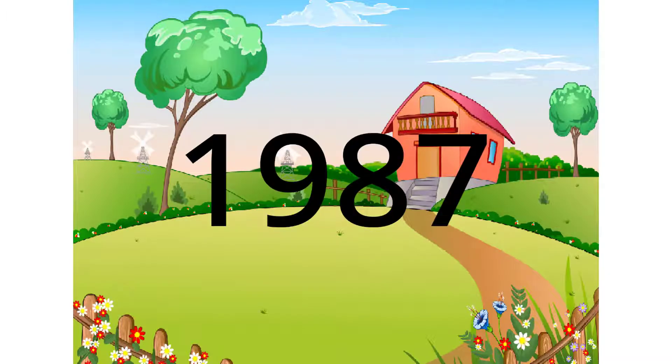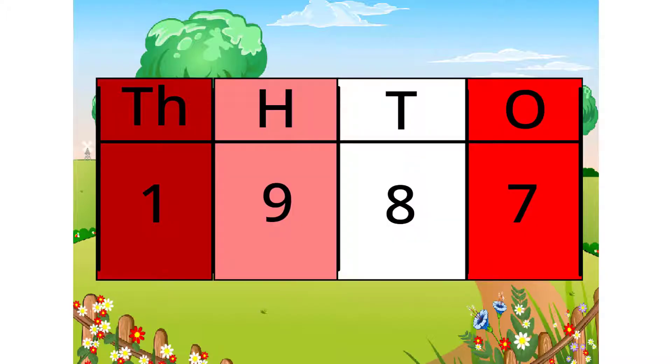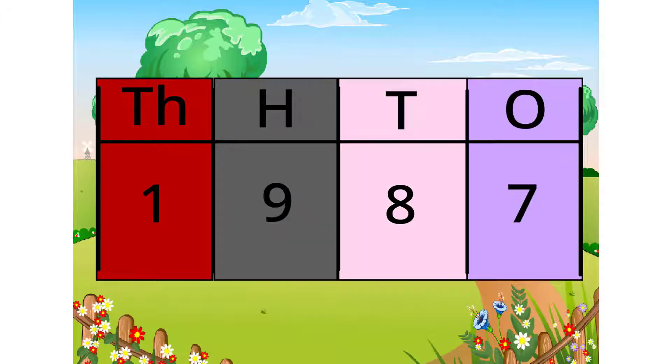Alright, let's split it into its units. This number is made up of 1 thousand 9 hundreds, 8 tens, and 7 ones. See? Let's see this in block form, shall we?